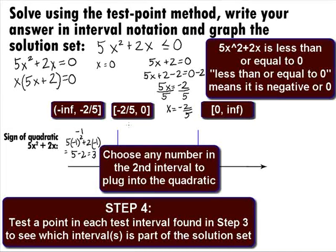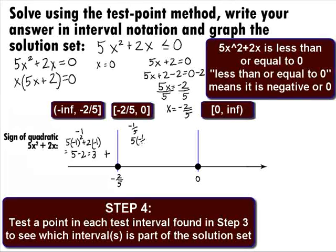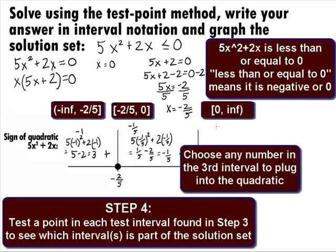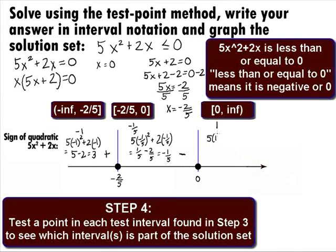Choosing negative 1 fifth from the second interval of negative 2 fifths to 0, we get 5 times negative 1 fifth squared plus 2 times negative 1 fifth, which simplifies to 1 fifth minus 2 fifths, which equals negative 1 fifth. Since we got a negative number and we're looking for it to be negative, this interval is part of the solution. Choosing 1 from the third interval of 0 to infinity, we get 5 times 1 squared plus 2 times 1, which simplifies to 5 plus 2, which equals 7. Since we got a positive number and we're looking for it to be negative, this interval is not part of the solution.